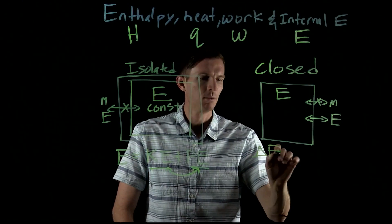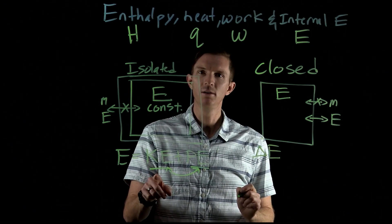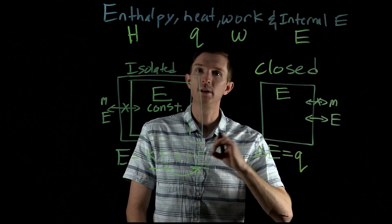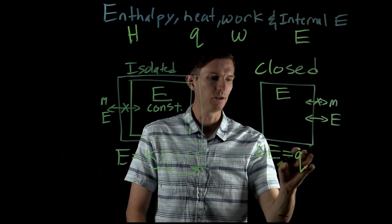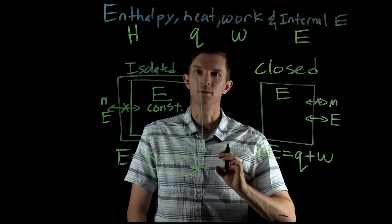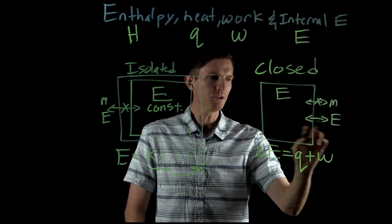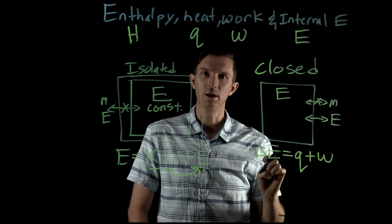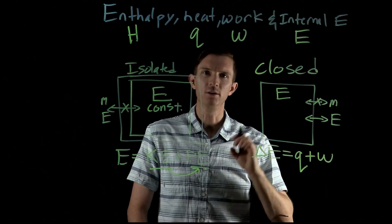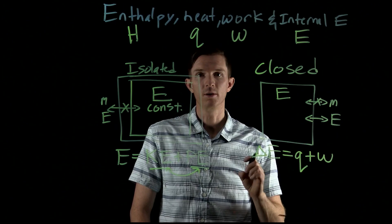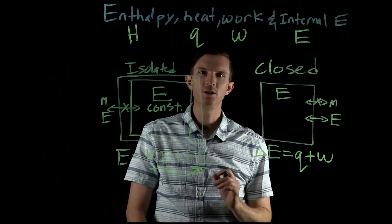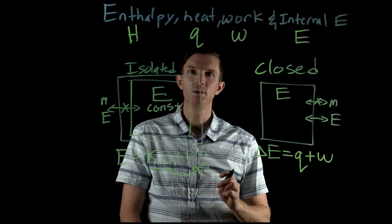Our internal energy can change by two different forms. One is a change in kinetic energy — we said that relates to heat. So we can absorb or release heat, and that is absorbing or releasing kinetic energy. Or we can do work, or have work done on us as the system. So internal energy can change by heat being absorbed or released, changing the temperature, or work being done. We'll focus on expansion work — expanding or contracting our system — so we can have our internal energy change by absorbing heat and allowing work to be done.